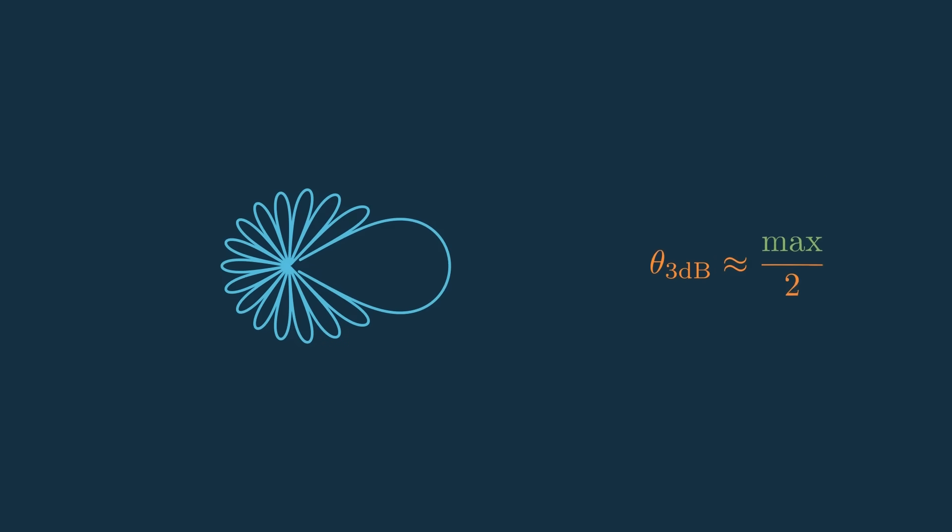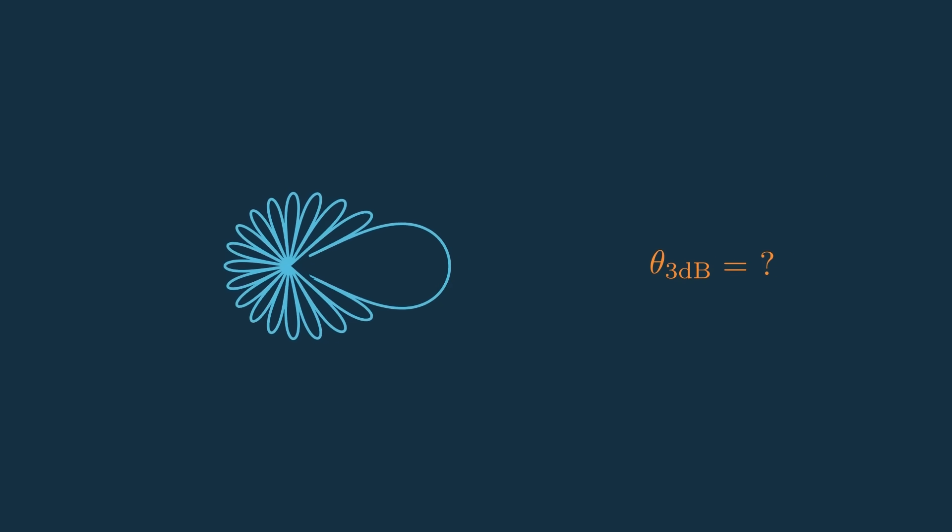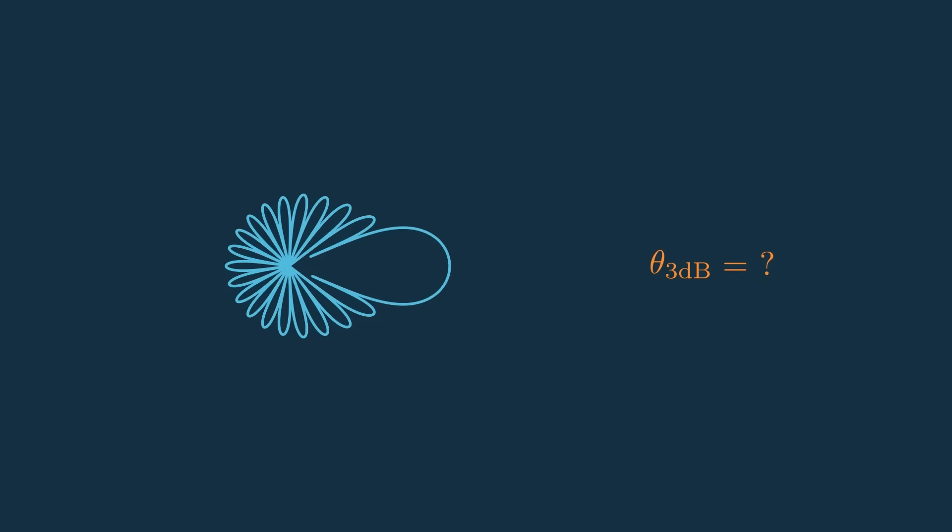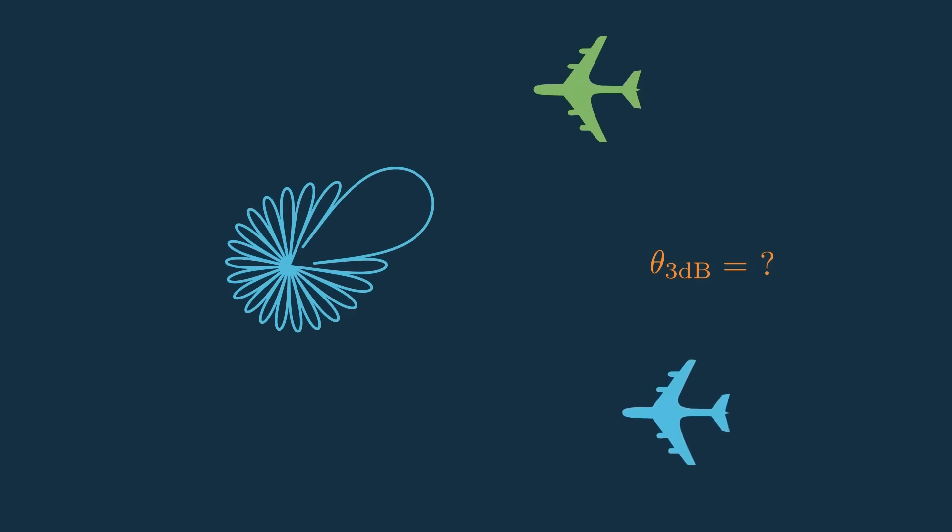Now what we want this beam width to be depends on the application, but often system designers will opt for what's called a pencil beam, which is basically just a really thin beam. This allows us to pinpoint specific areas in space and get minimal interference from other targets.